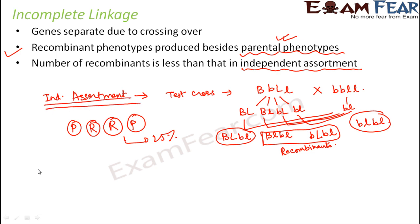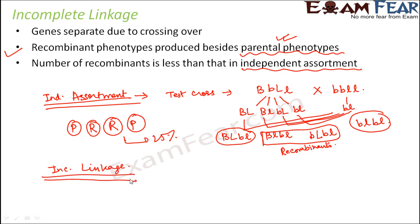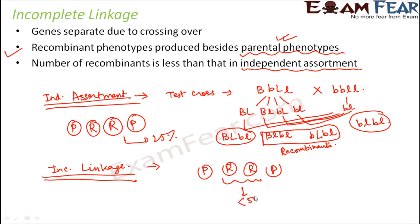In complete linkage there are no recombinants — just parental types. In incomplete linkage, you get some as parents and some as recombinants, but the ratio changes — the percentage of recombinants is quite less than 50%, because the genes are on the same chromosome but not completely linked.